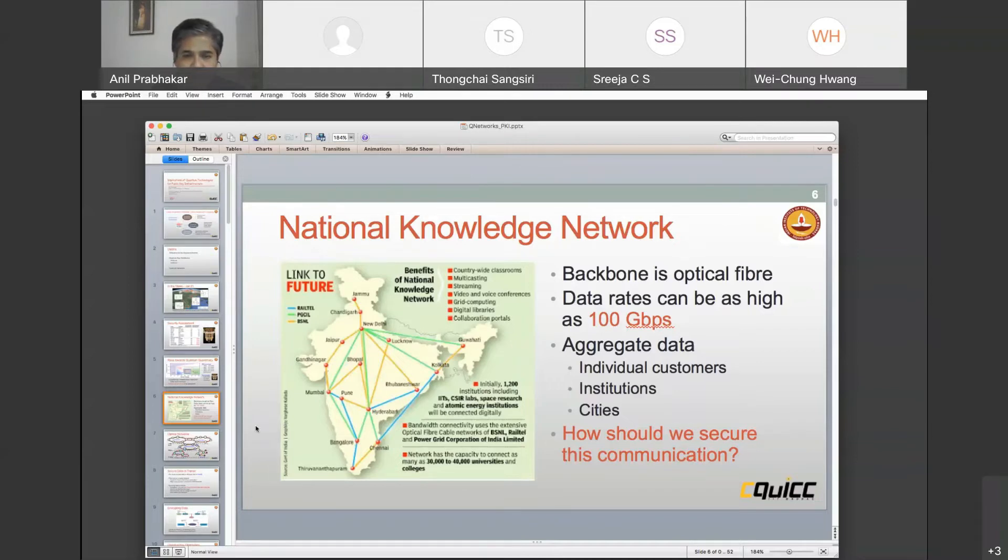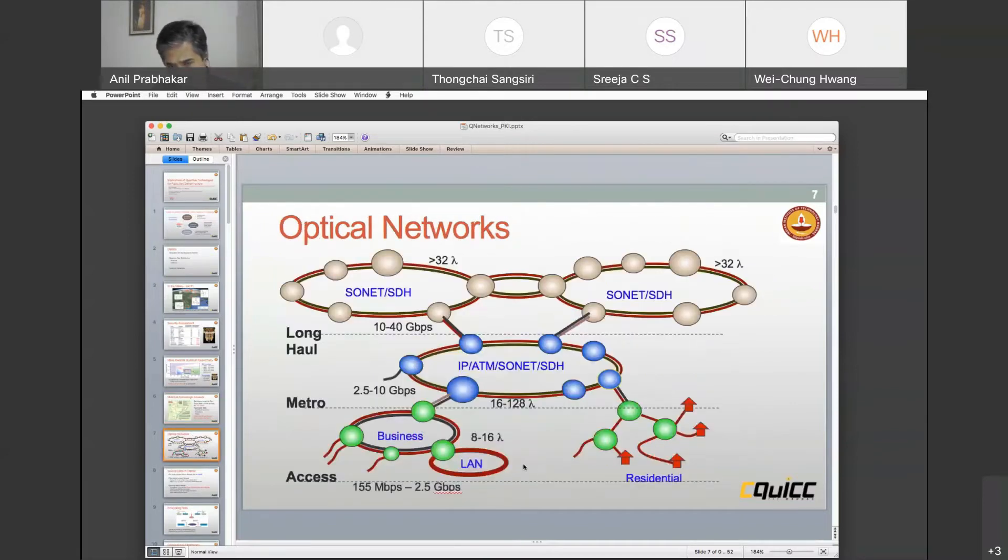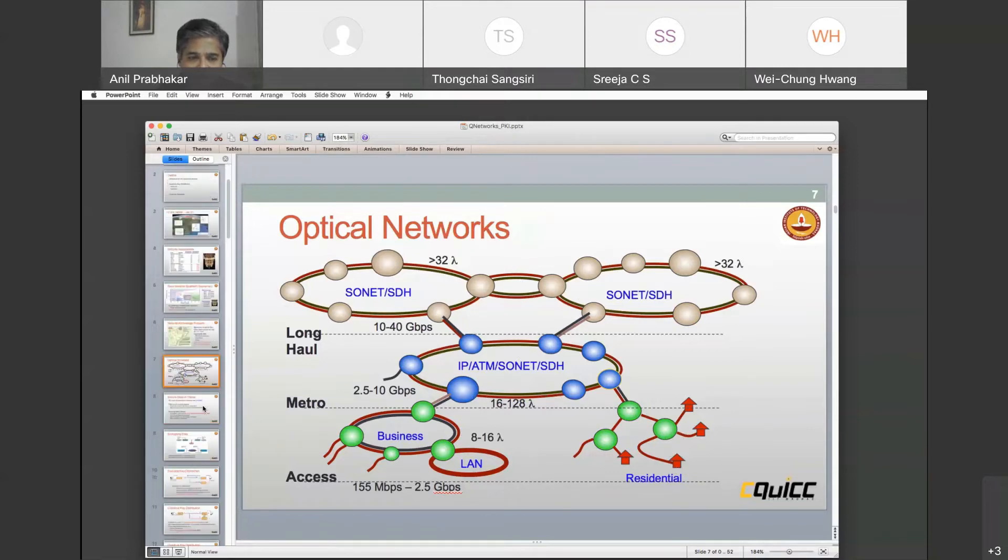Just to understand a little bit more about how this works, you have to understand that each of us doesn't use 100 gigabits per second. It's an aggregated model. You'll have business LANs that are running at about 155 megabits per second to 2.5 gigabits per second. You have the residential fiber to the home. Then that goes into metros that are running at about 10 gigabits per second. Then you have the long haul, which is running at 10 to 40 gigabits per second.